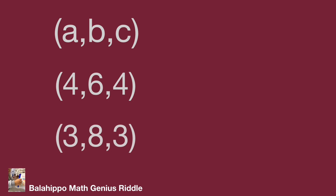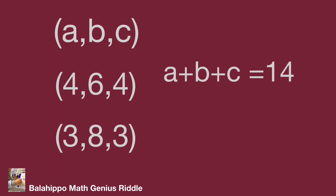The a, b, c number groups we found are (4, 6, 4) and (3, 8, 3). The question asks for the sum a plus b plus c equal to 14 — that's the answer. Do you get the same result? Hope you enjoy the video. Thank you.